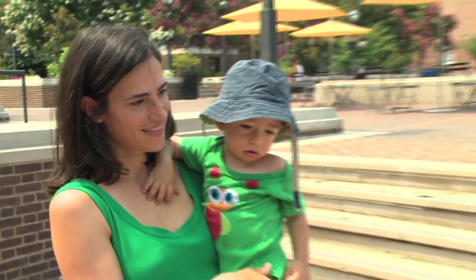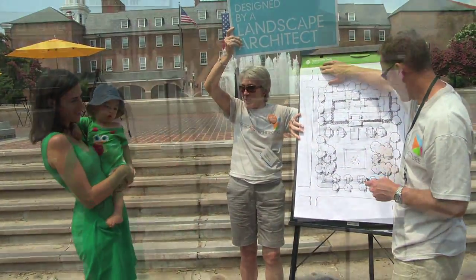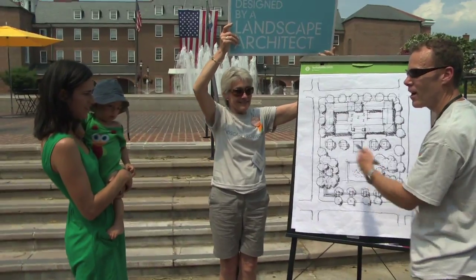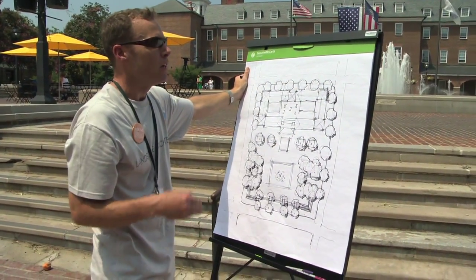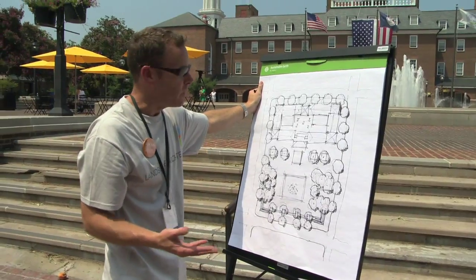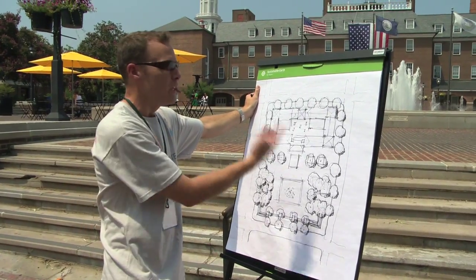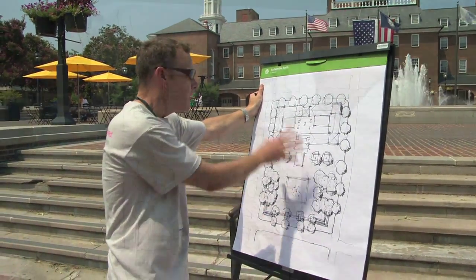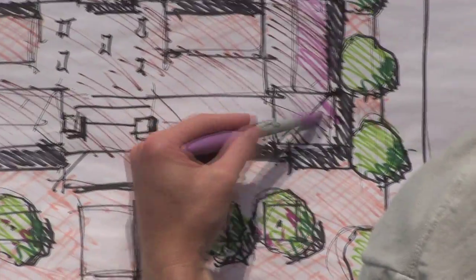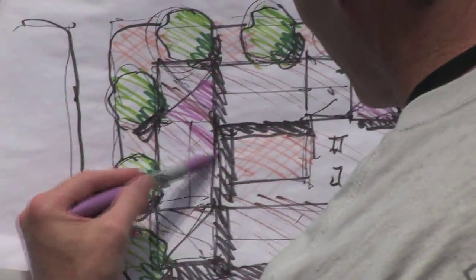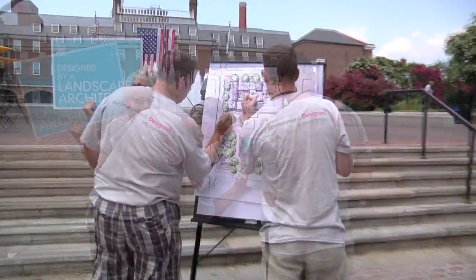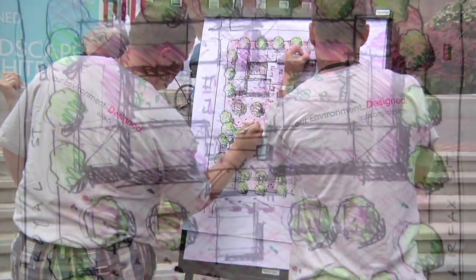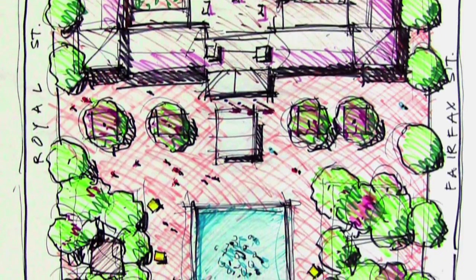This is the first step in a process that landscape architects go through when they envision a design — working with clients, understanding all the parameters we need to deal with, and then eventually turning that vision into a plan and then taking that through a process to technical documentation to actually construct a space like this. So it's a part of the creative visioning process that we go through.